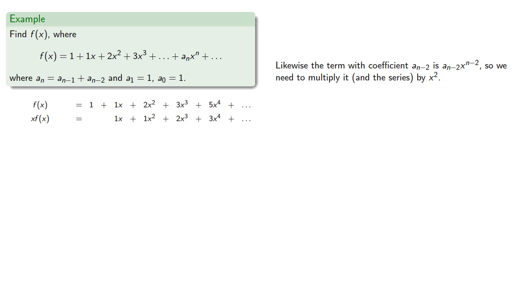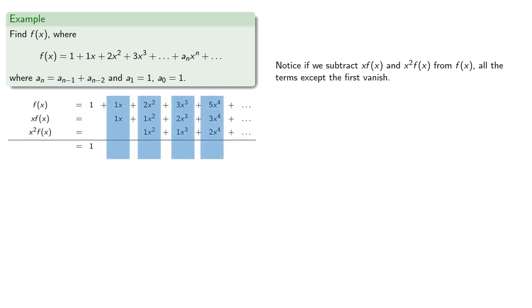Likewise the term with coefficient a_{n-2} is a_{n-2}x to n-2, so we need to multiply it and the series by x squared. Notice if we subtract xf(x) and x²f(x) from f(x), then all the terms except for the first vanish.